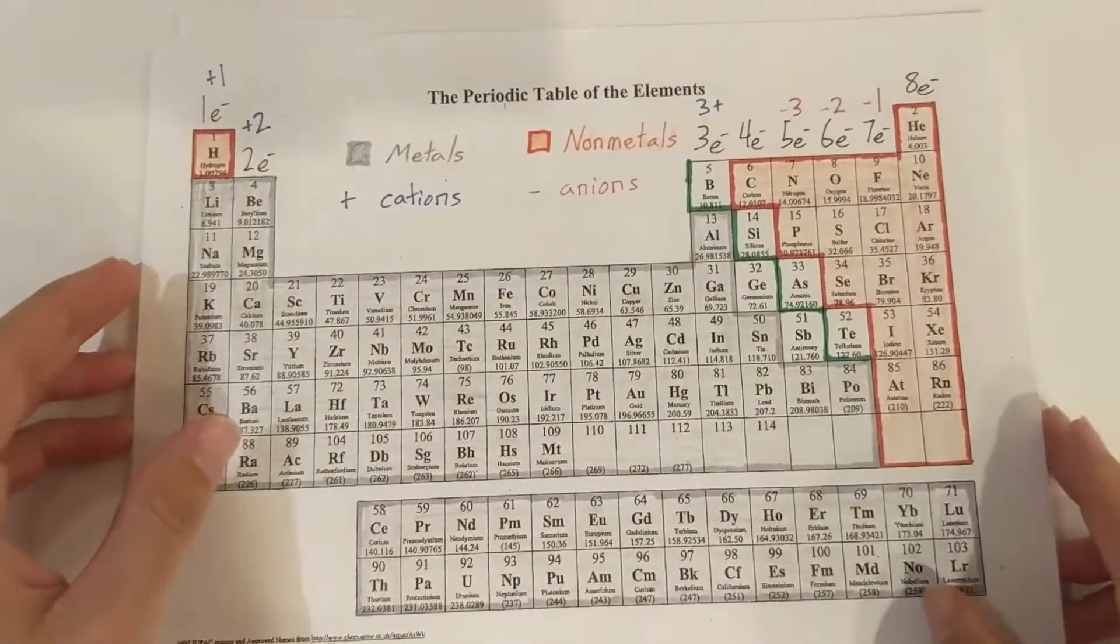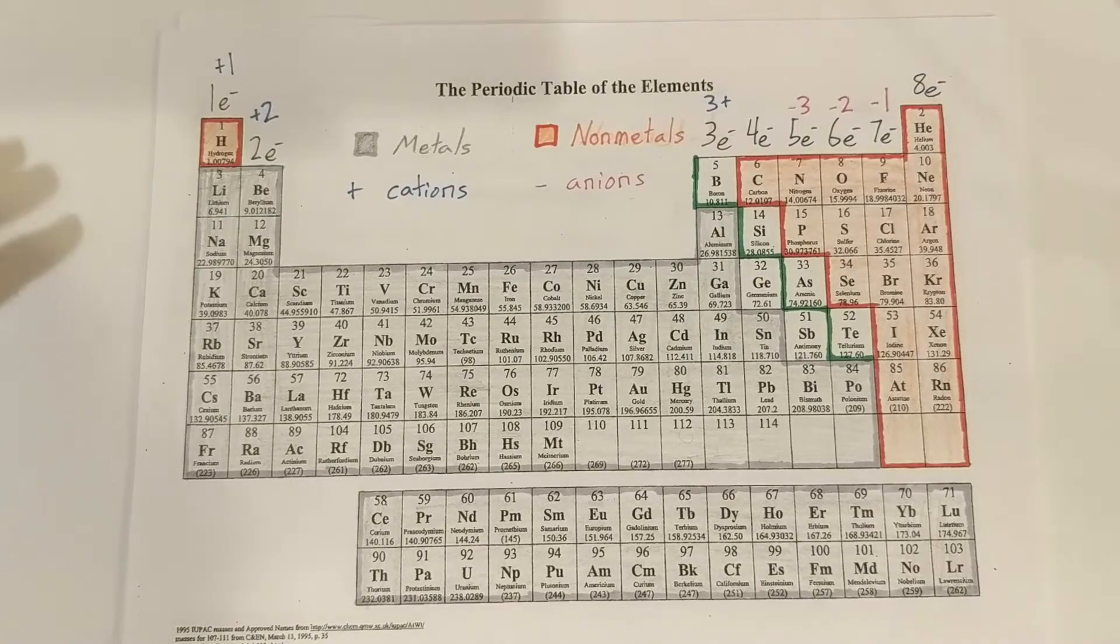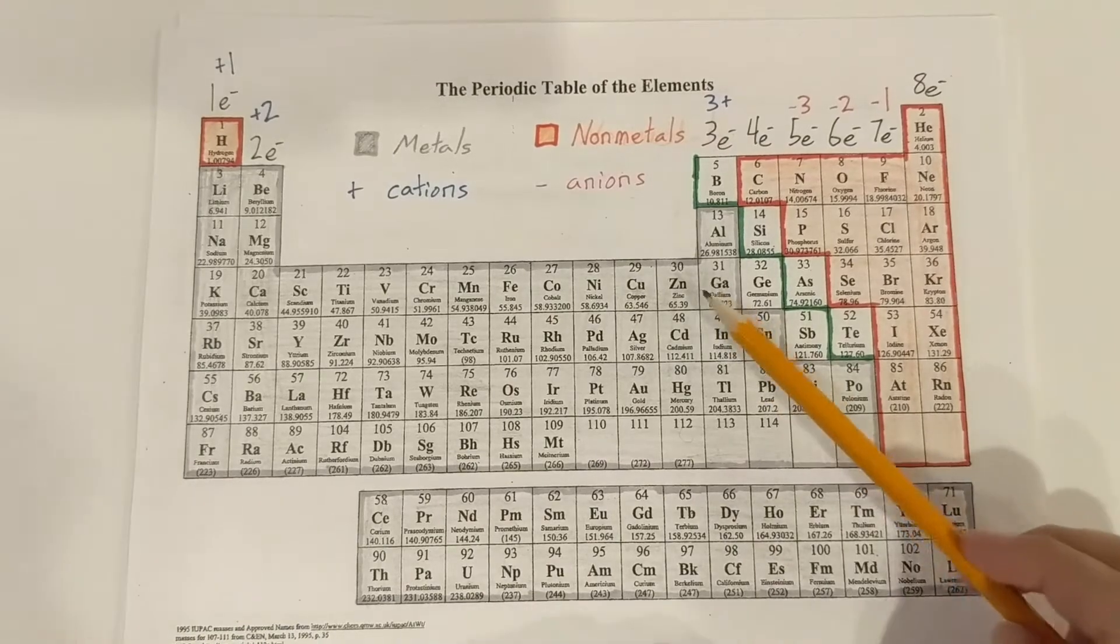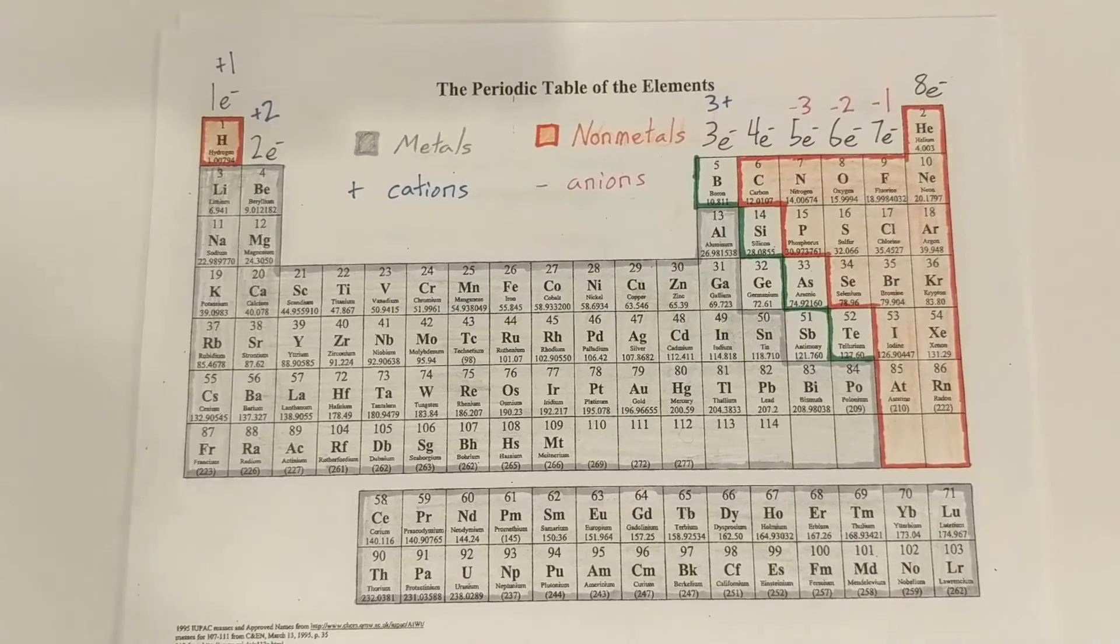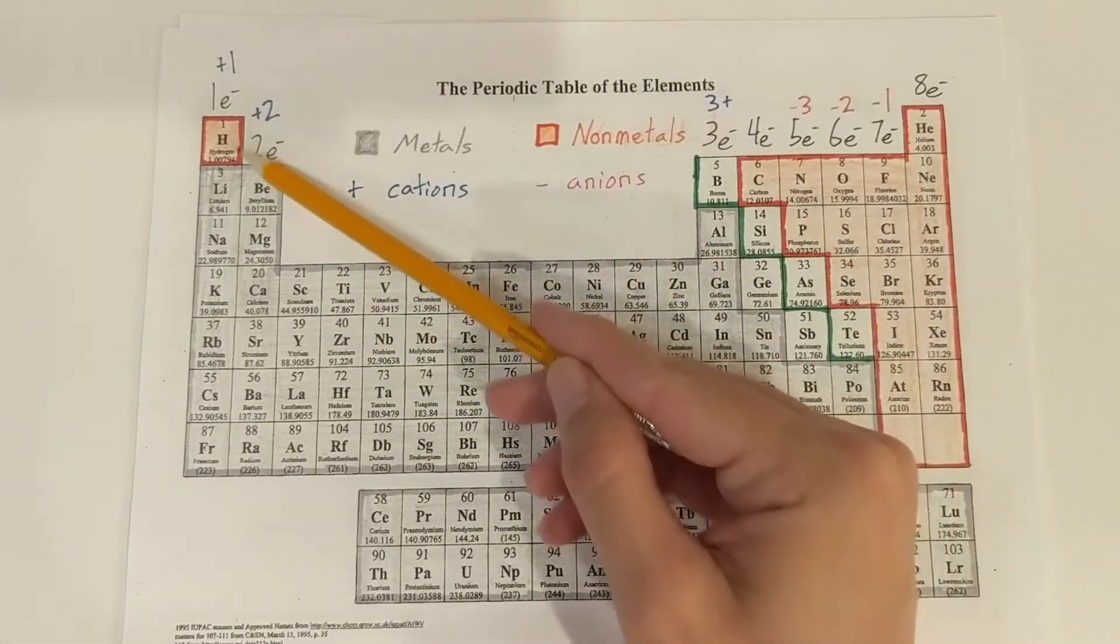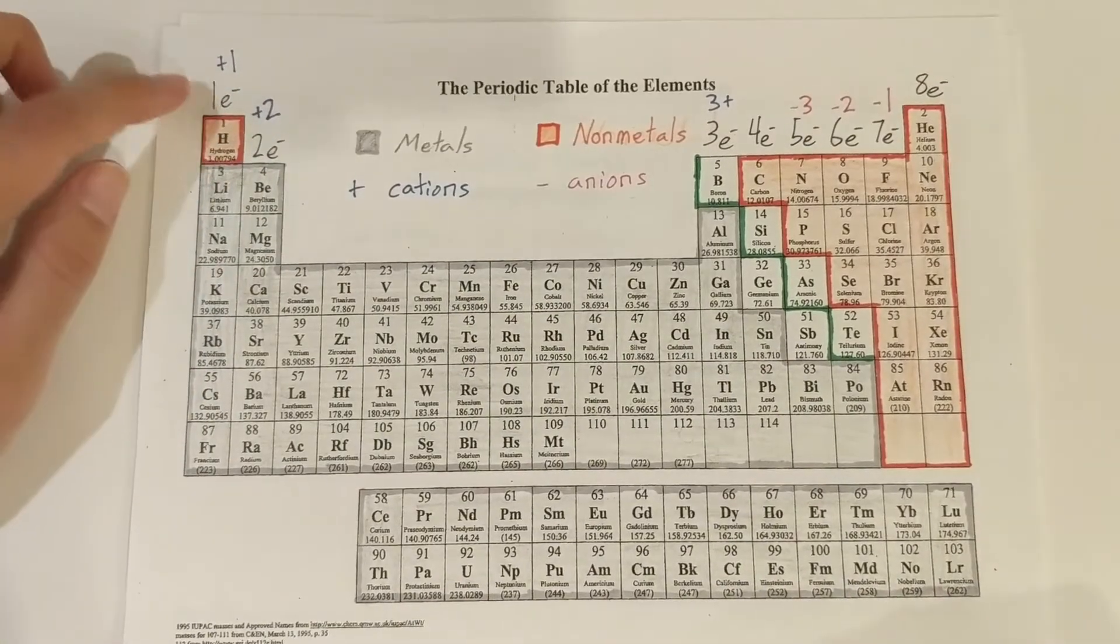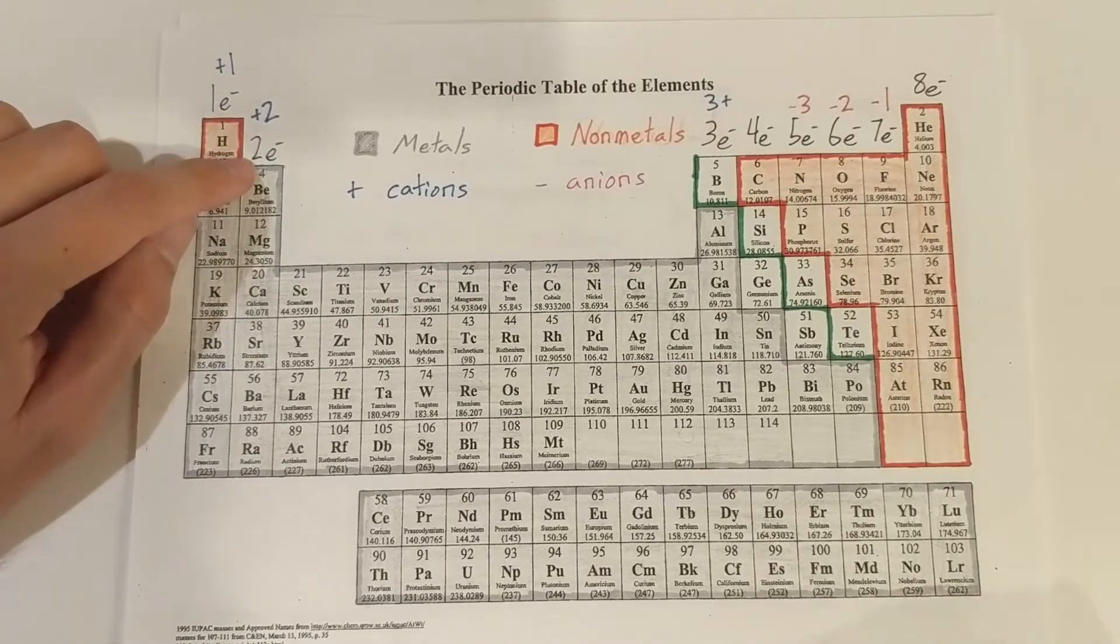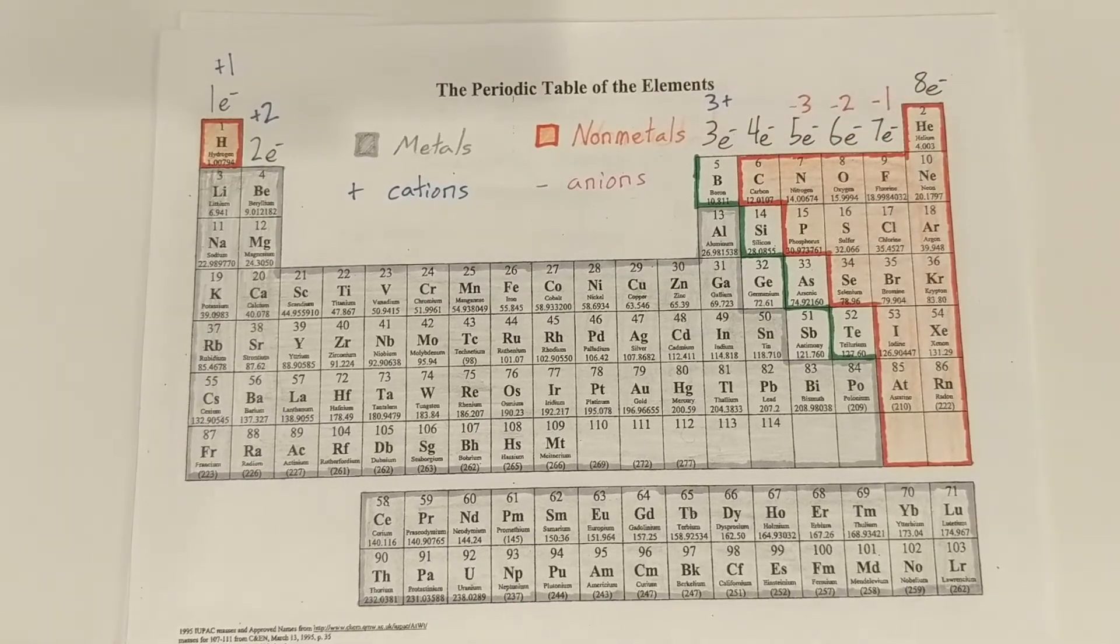So I'm going to bring this back actually, because I want to talk about the charge that these elements can have if they gain or lose electrons. Our metals always will lose their electrons to form a charge. And depending on how many valence electrons they have, that's how many electrons they lose. And that's what their positive charge will be. So if it had one valence electron, it'll have a positive one charge. Two valence electrons, a positive two charge. Or if it has three valence electrons, it'll have a positive three charge.